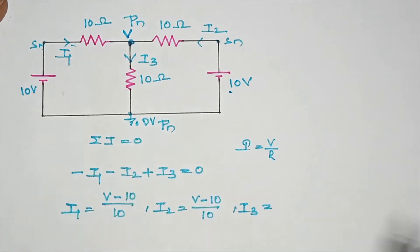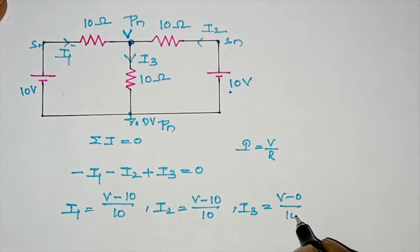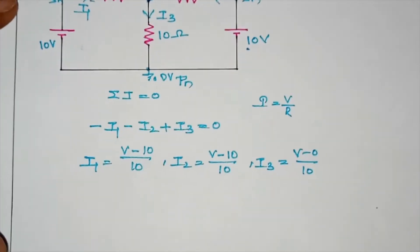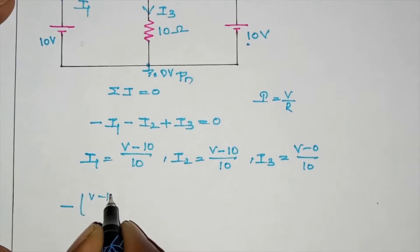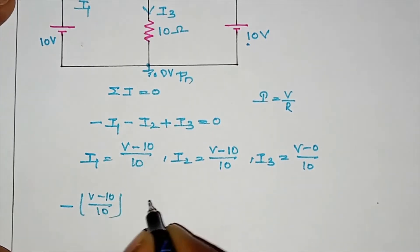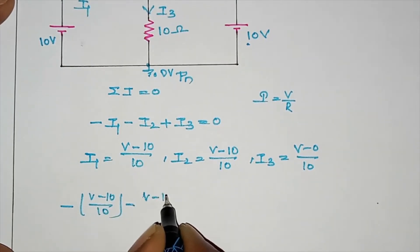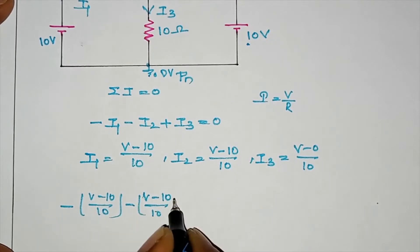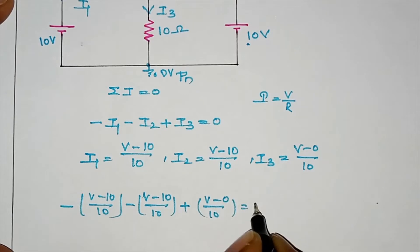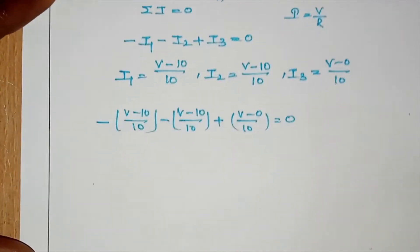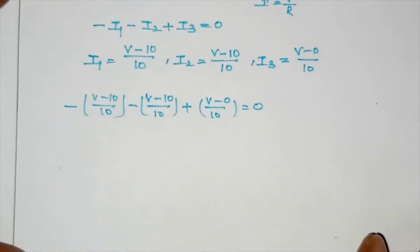V minus 0 by 10 — this equation is: minus V by 10, minus V by 10, plus V minus 0 by 10, equal to 0. Then simplify: minus into plus, minus minus.